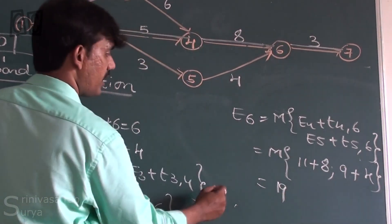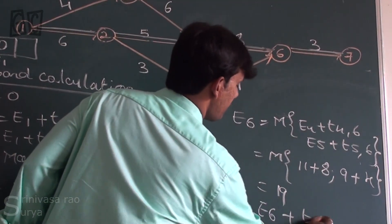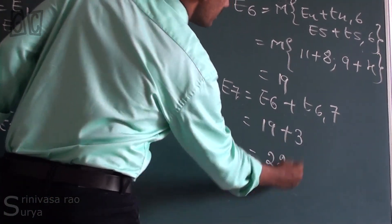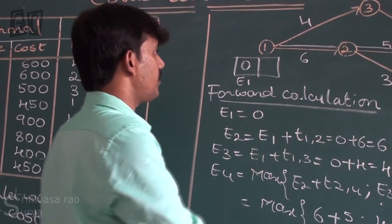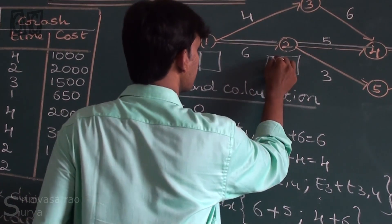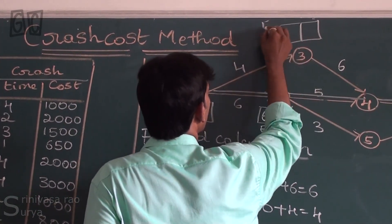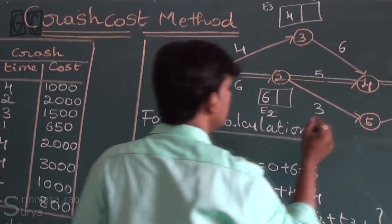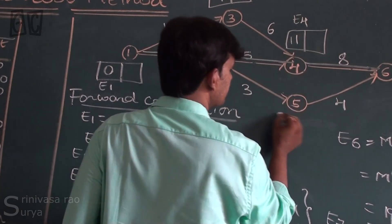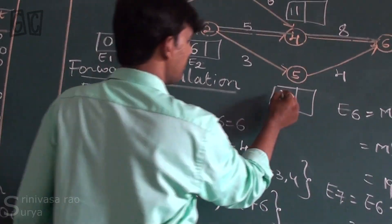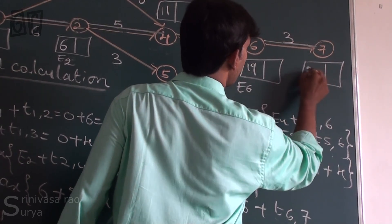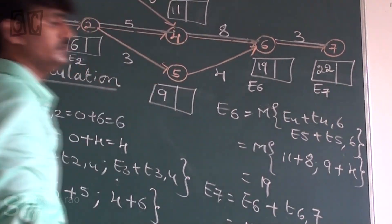E7 is coming from E6 plus time taken from 6 to 7, that is 19 plus 3, obviously 22. To summarize the forward calculation values: E2=6, E3=4, E4=11, E5=9, E6=19, and E7=22.